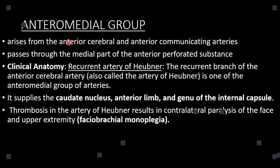Let's discuss the anteromedial group. The anteromedial group arises from the anterior cerebral artery and from the anterior communicating artery, and it passes through the medial part of the anterior perforated substance. These arteries supply the following structures: the caudate nucleus, the anterior limb, and the genu of the internal capsule. The internal capsule contains projection fibers that project from the cerebral cortex all the way to the spinal cord.